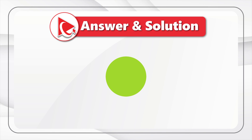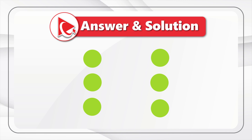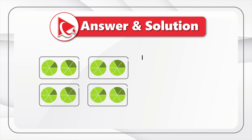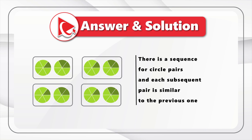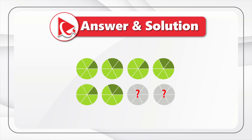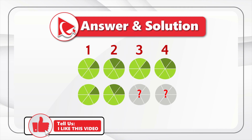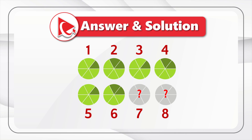To answer this question, we need to detect the pattern, and the pattern here is very simple. Each circle is broken down into sections with darker sections and lighter sections. If you look closely, you will see that all circles are grouped in pairs, and the pattern is hidden in the sequence of circle pairs, with each subsequent pair being similar to the previous one. To better understand the pattern, let's give each circle a unique number: the top row is one, two, three, four, and the bottom row is five, six, seven, and eight — with seven and eight being our missing pair.